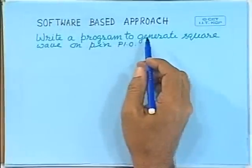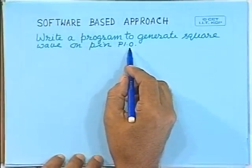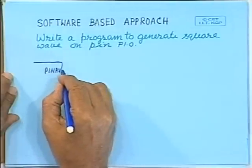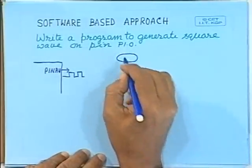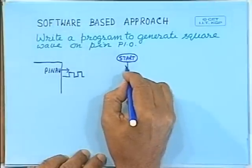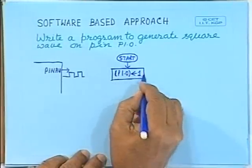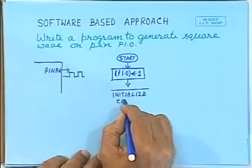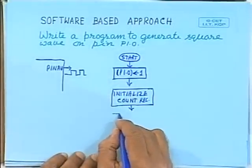Let us have a look at the software-based approach — how we can write a program to generate a square wave on pin P1.0. The 8051 has pin P1.0 on which we have to generate some clock. Starting with a flowchart: set pin P1.0 to 1, then initialize a count register, decrement the count register, and check whether the count value is 0 or not.